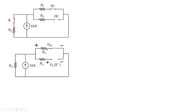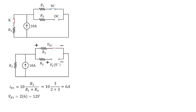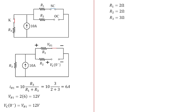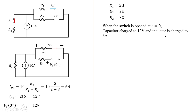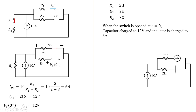We have calculated IR1 as 6 amperes, R1 voltage as 12 volts, and the same voltage is across the open circuit capacitor — these were conditions when switch was closed. With R1, R2, and R3 as 2 ohms, 2 ohms, and 3 ohms respectively, when the switch is opened at t equal to 0, the capacitor is charged to 12 volts and the inductor to 6 amperes. R3 gets disconnected and the circuit is driven by the 10 ampere source.